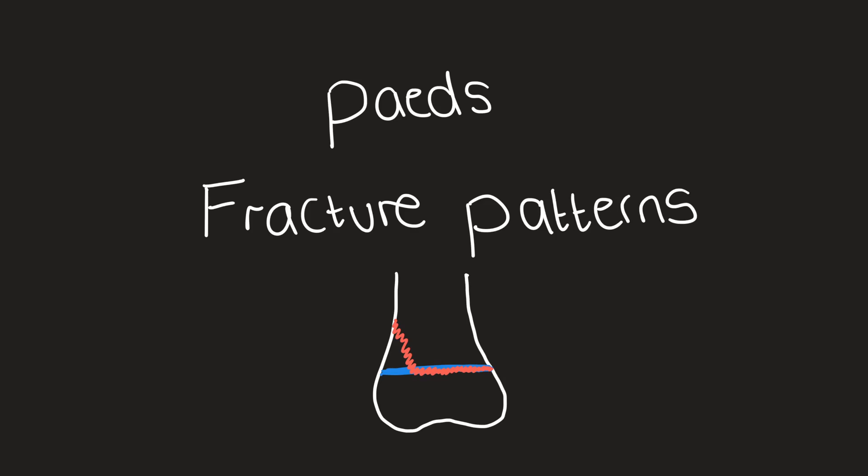In this video, we're going to cover the common fracture patterns that occur in the paediatric population. Because paediatric bones are softer than adult bones and more malleable, the types of fractures that you get can be quite different. I'd just like to thank Dr Karen Landers and all the radiology consultants at Alderhey Hospital in Liverpool for the use of these images.